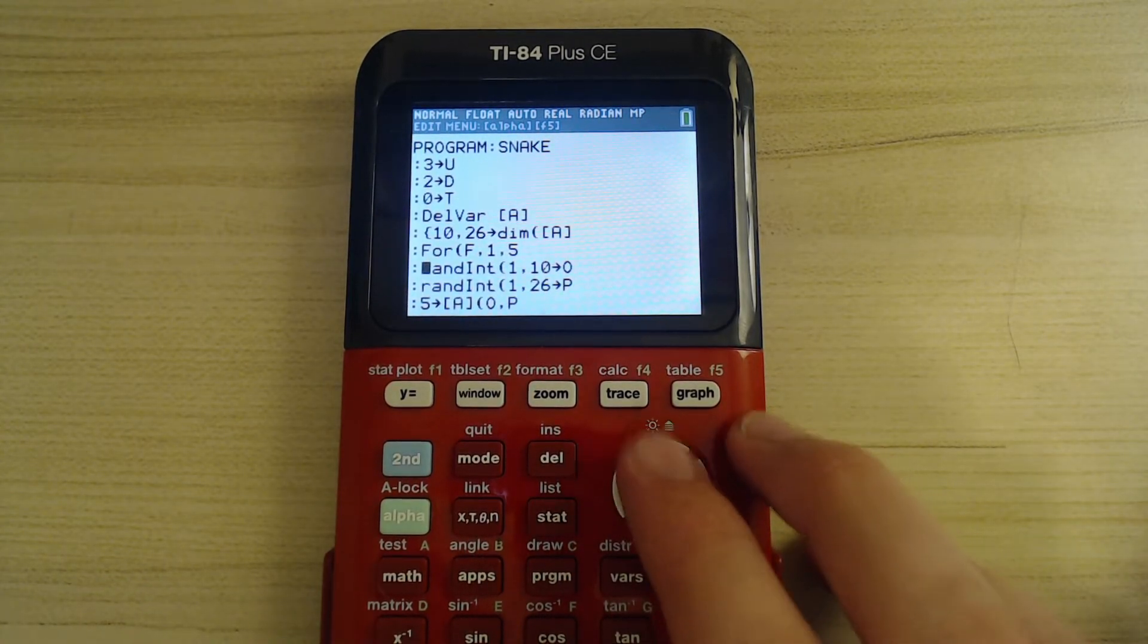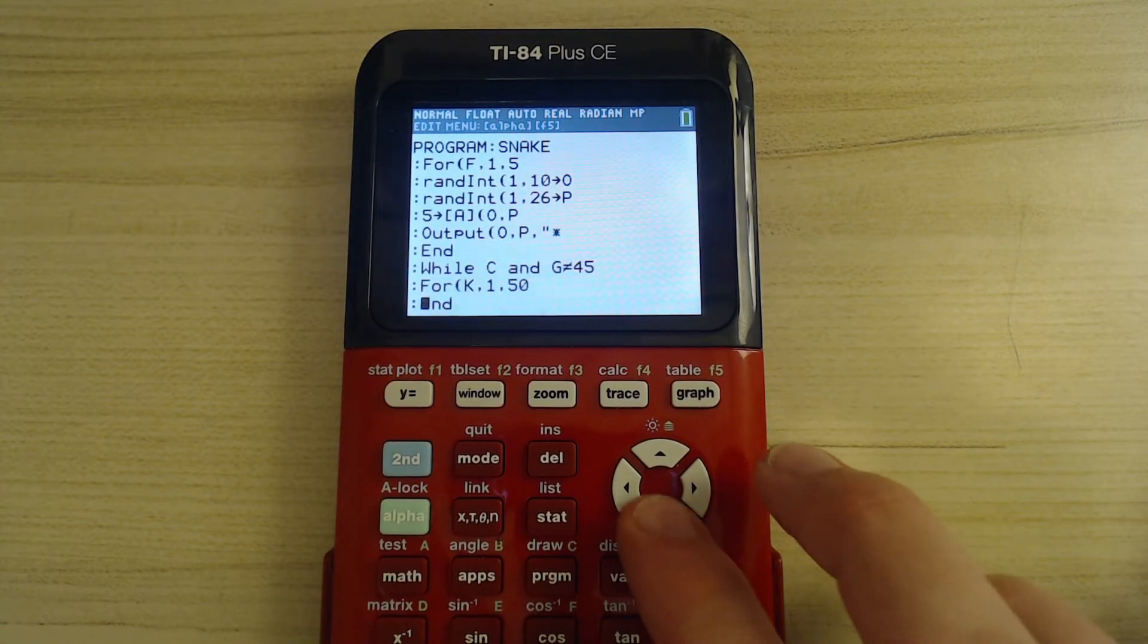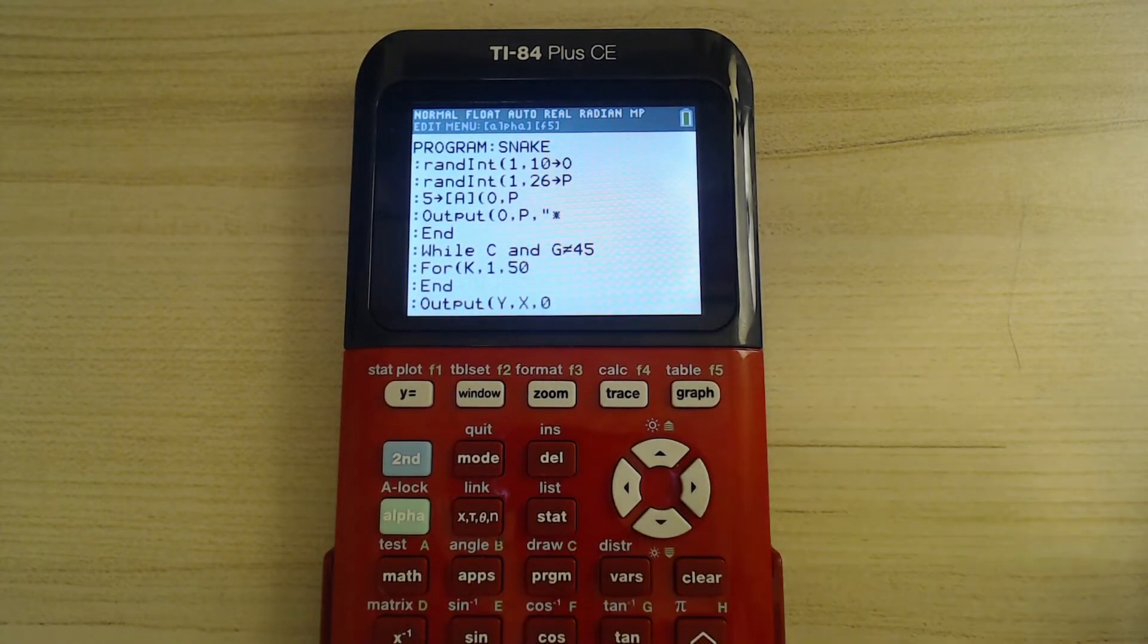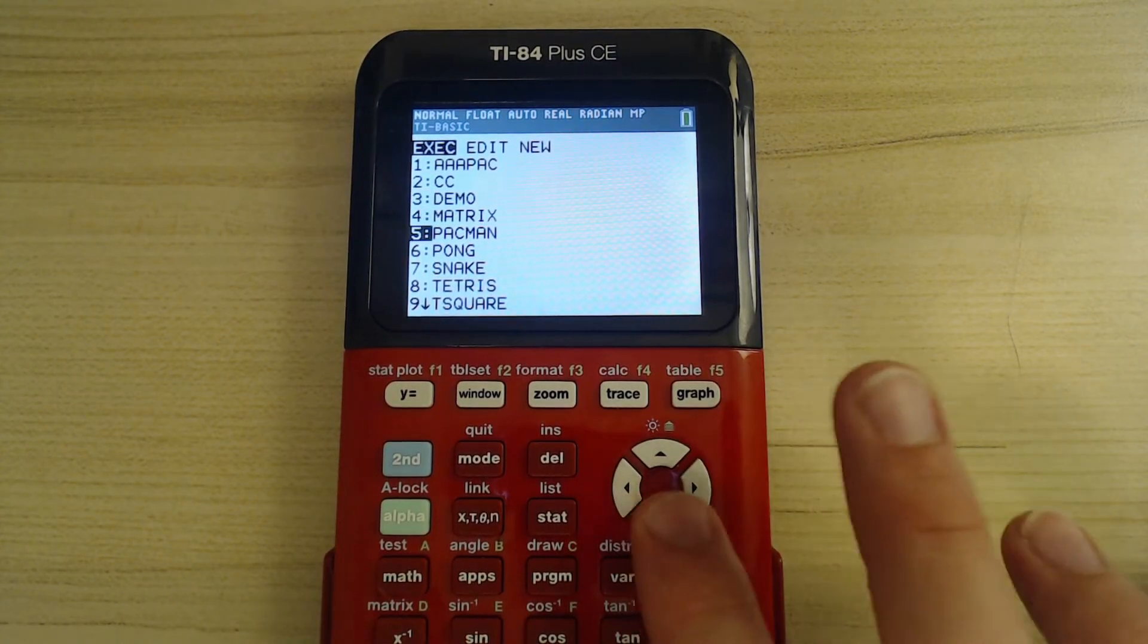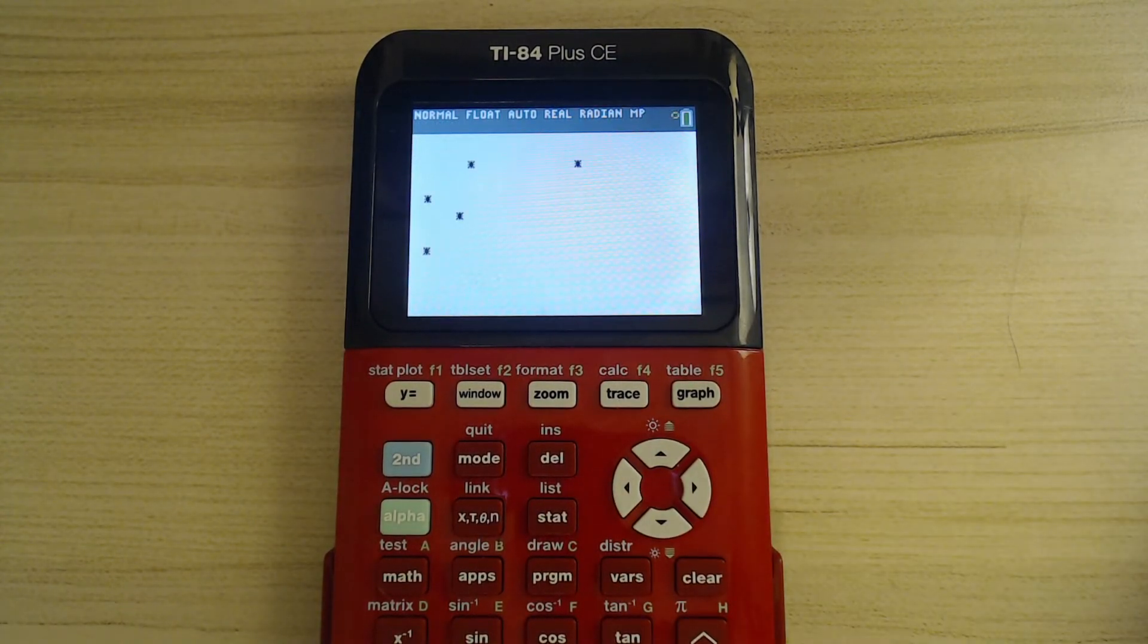For example, I have no idea what you guys need, but I'm just going to say 1,000, see how that affects my calculator. So we're going to go back down to snake, enter, enter. Oh my goodness. That's very slow on my calculator.